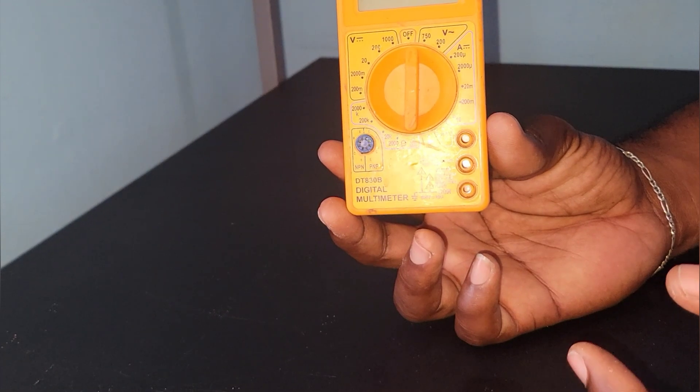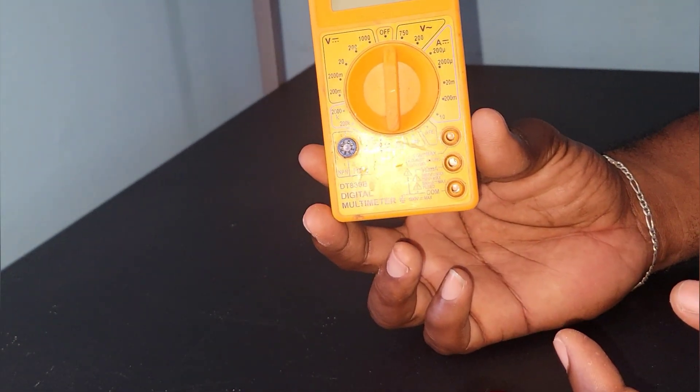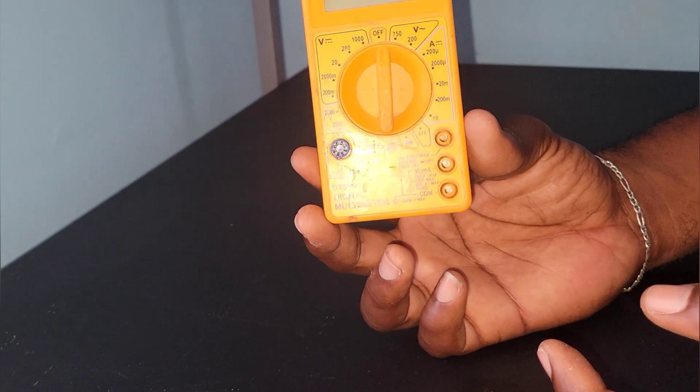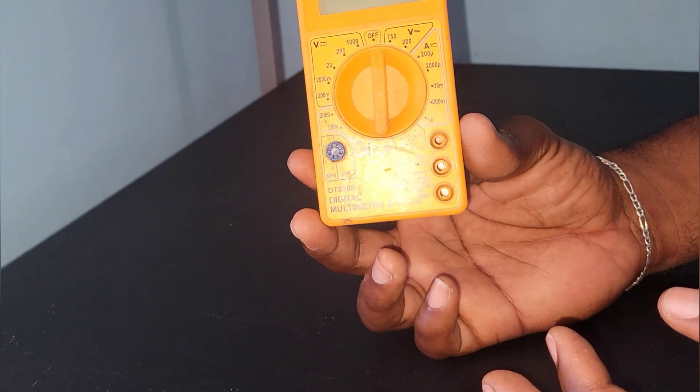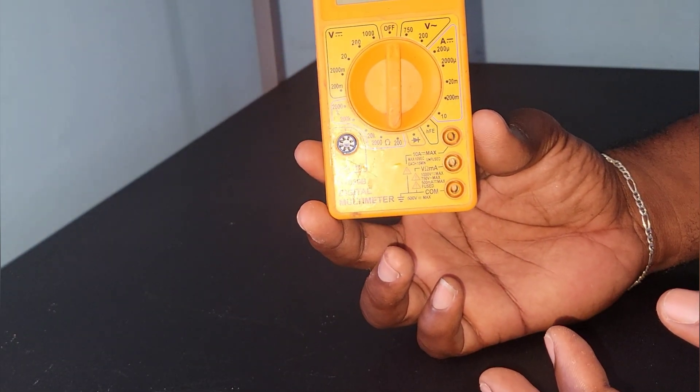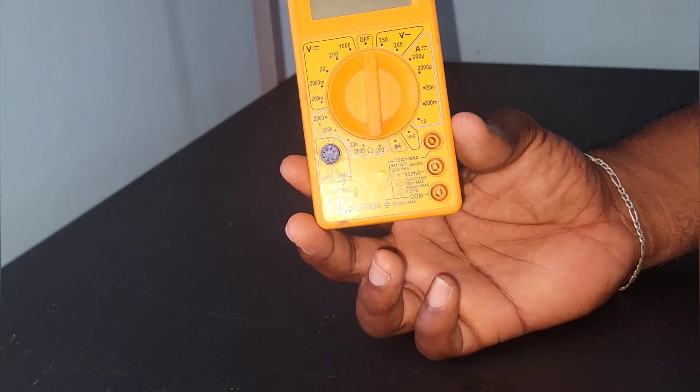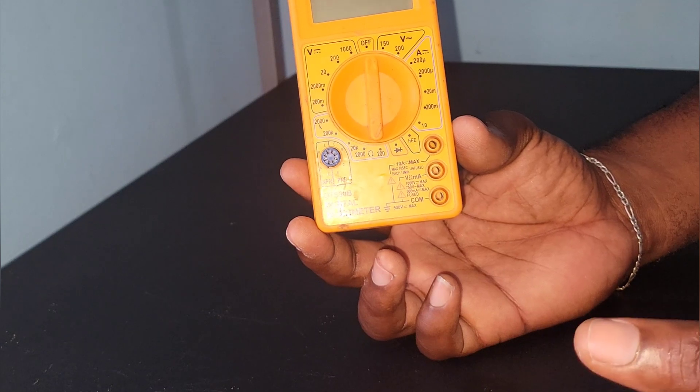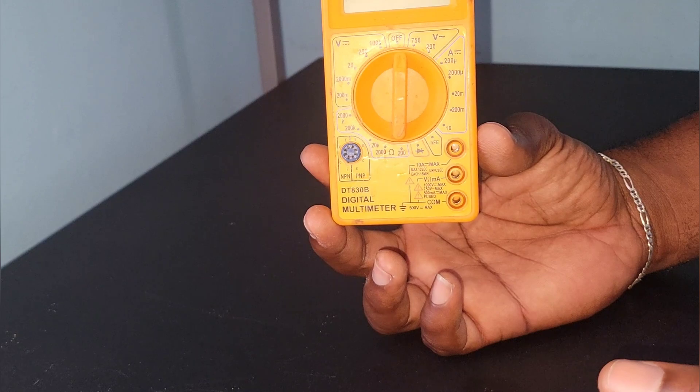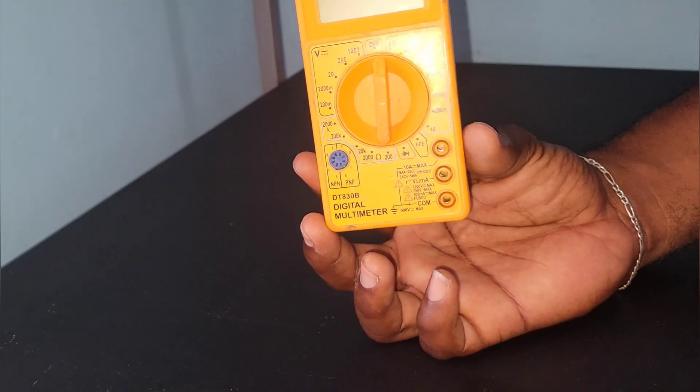But if you are a regular homeowner who wants to carry out checks, if you want to measure DC current or DC voltage or even AC voltage in your home, you can also measure resistance and I think it can carry out diode checks as well. So if you want to do that as a regular homeowner, yes, this digital multimeter is for you.